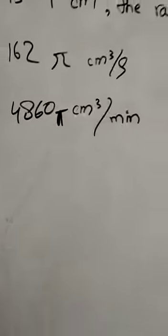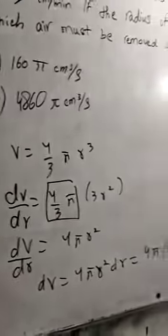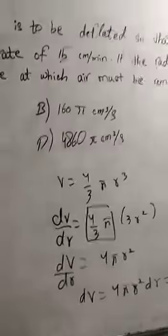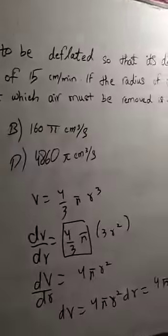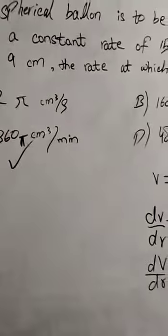We have 4860 with two options: π cm³/min or π cm³/sec. The correct option is 4860π cm³/min.